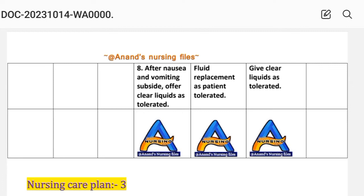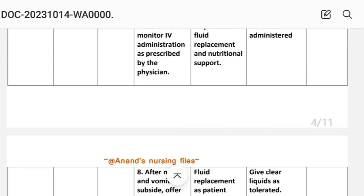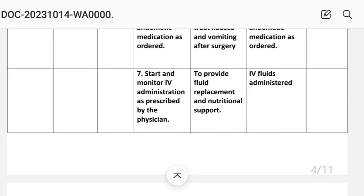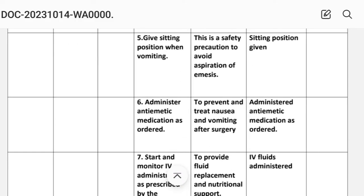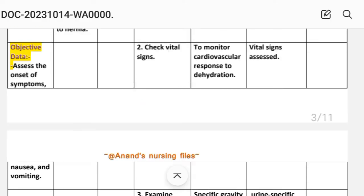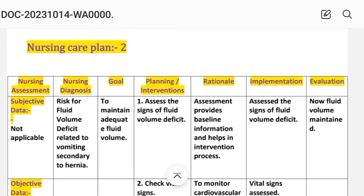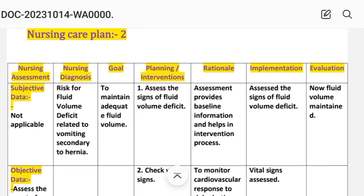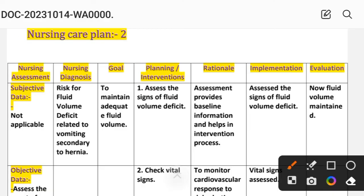After writing these interventions, we write the evaluation steps for this care plan. Evaluation for nursing care plan number two: fluid volume maintained — adequate fluid volume achieved by different interventions provided to the patient.